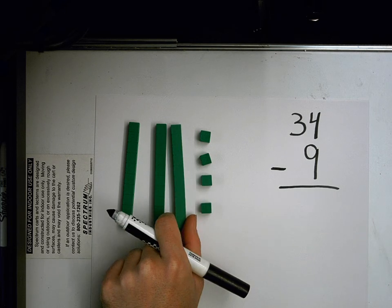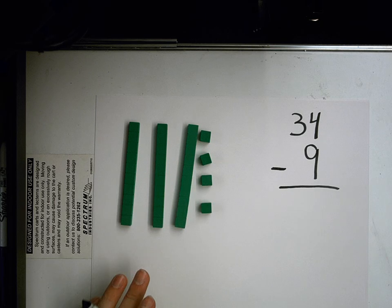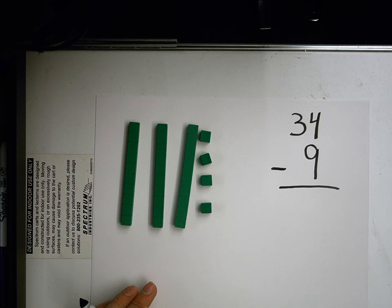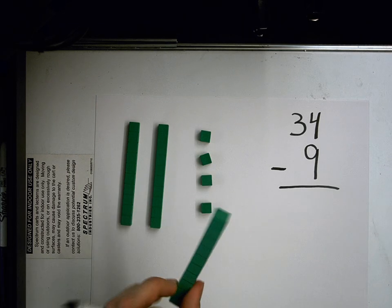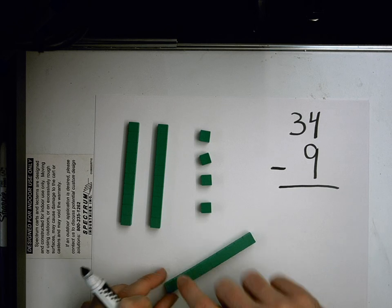I need to trade one of these tens for, what do I need to trade one of these tens for, Hannah? 9 ones. Not 9 ones. Brayden. 10 ones. 10 ones. Because this has 10 blocks in there.